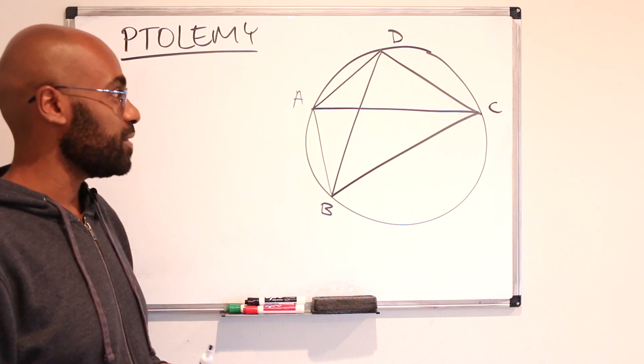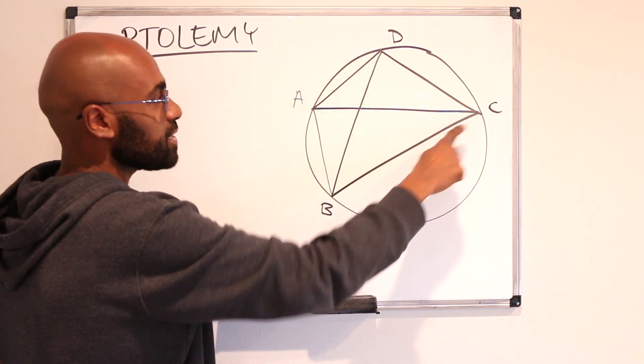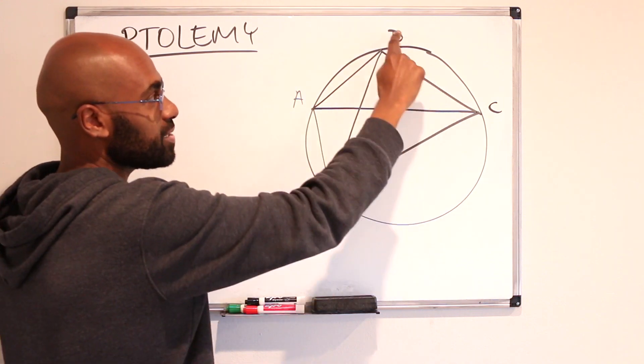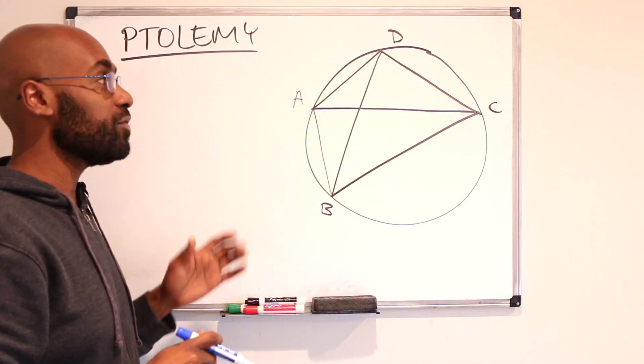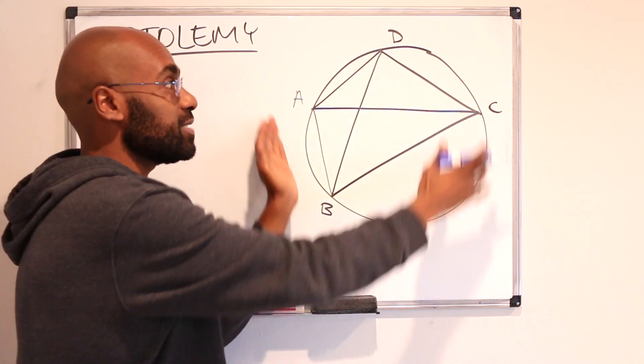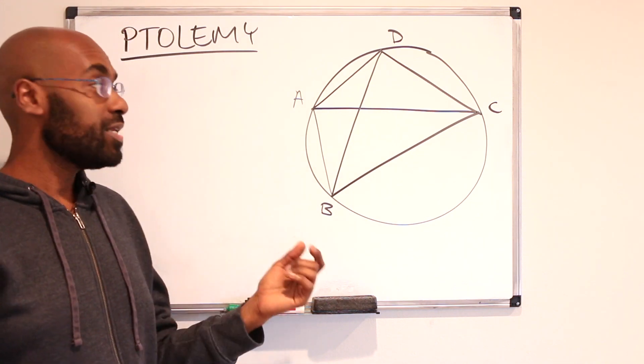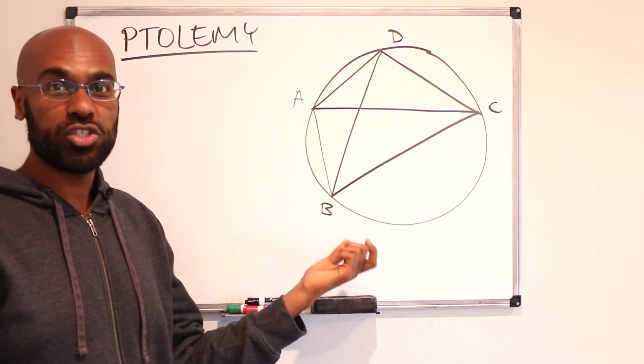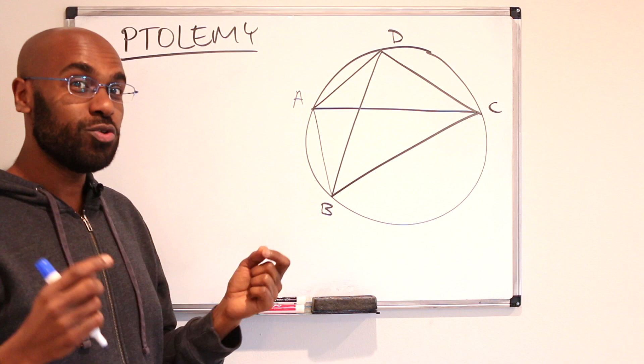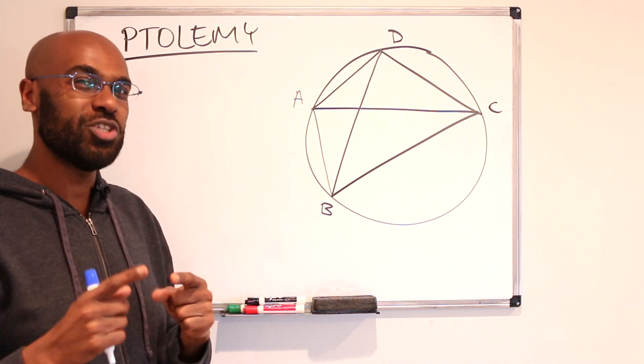Ptolemy's theorem is this really interesting theorem that relates the side lengths of a quadrilateral to the lengths of the diagonals of that quadrilateral if the quadrilateral is inscribed inside of a circle. Today we're going to see a reason why that relationship is true and actually use it to prove a classical theorem in geometry.